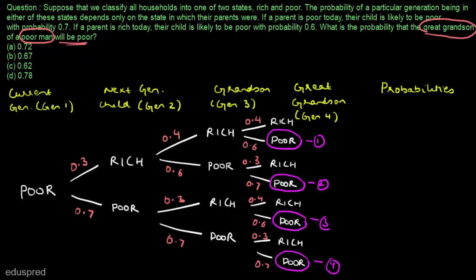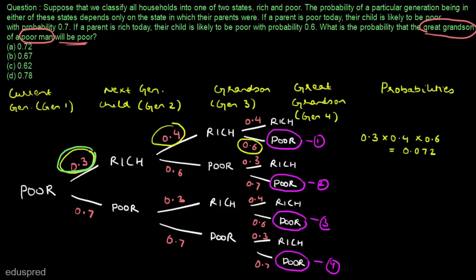Let's find the probability of case number one. The probability of case number one is 0.3 multiplied by 0.4 multiplied by 0.6, because all three of these transitions must happen for the great grandson to be poor. So the probability of case number one is 0.3 × 0.4 × 0.6 = 0.072. Now let's find the probability of case number two. The probability of case number two is 0.3 multiplied by 0.6 multiplied by 0.7, which equals 0.126.